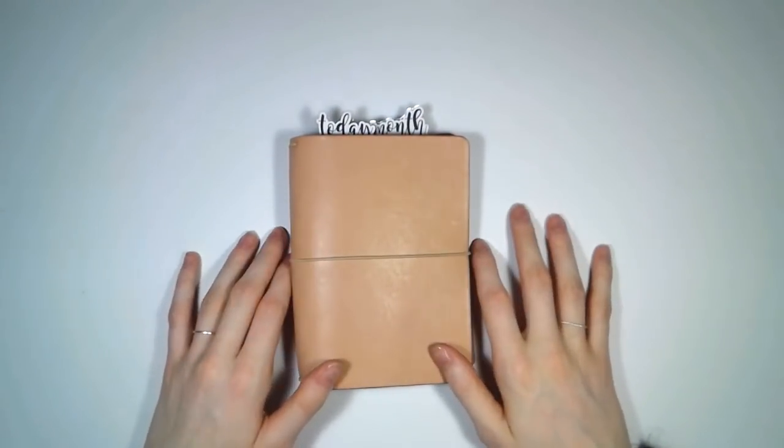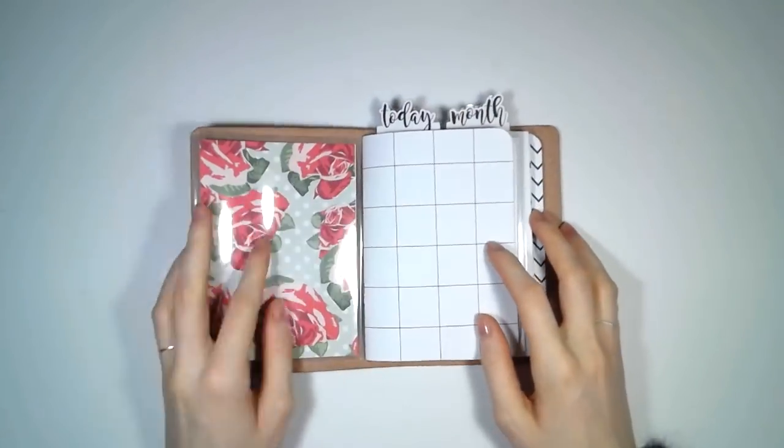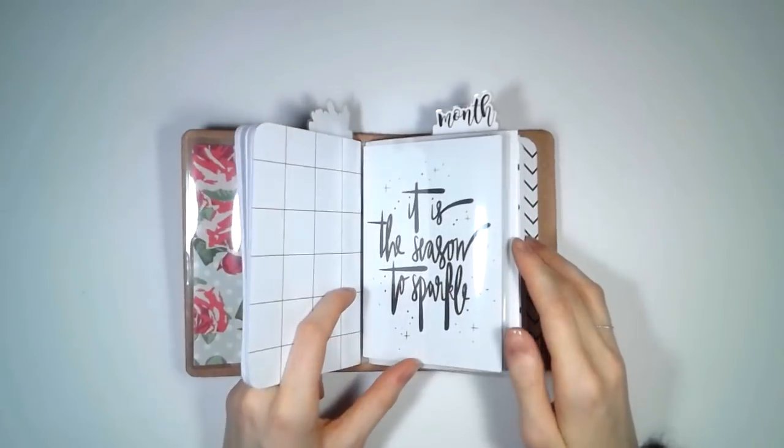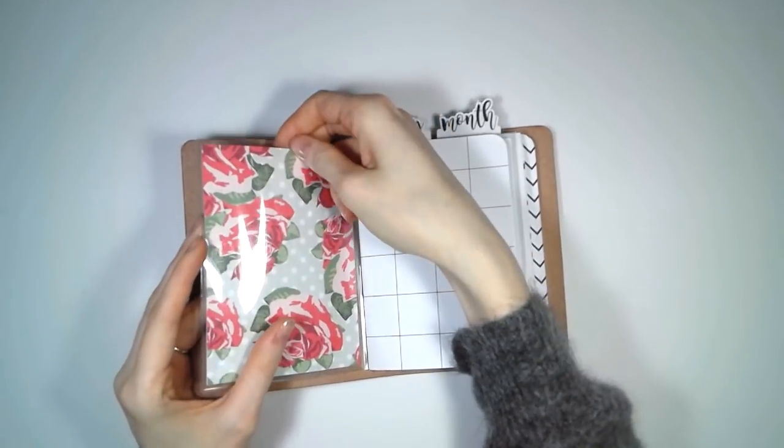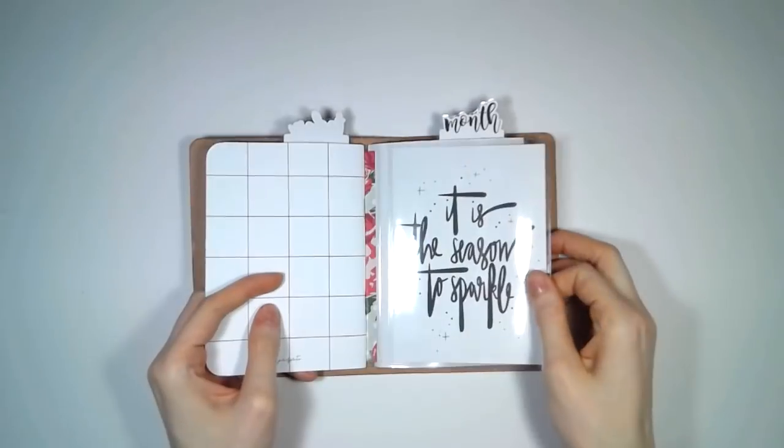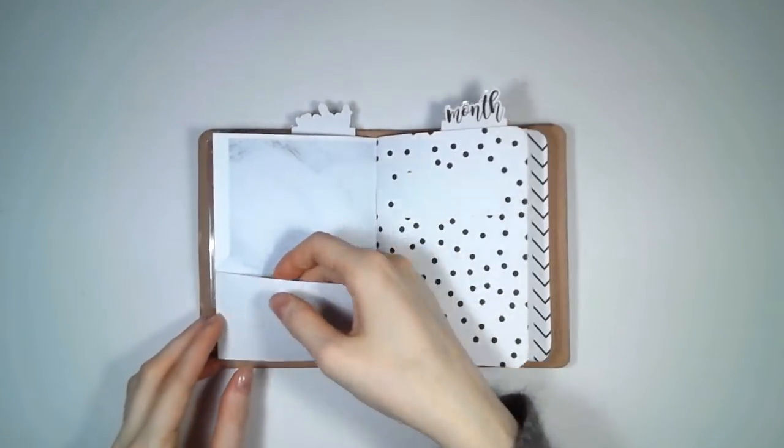Hi guys and welcome back to my channel. Today we're going to make three different DIYs for a traveler's notebook and this video was sponsored by Storyblocks. The first thing we're going to make is a divider. You can use it to spice up your setup or to show some memories like pictures and quotes, anything you want to put in there.